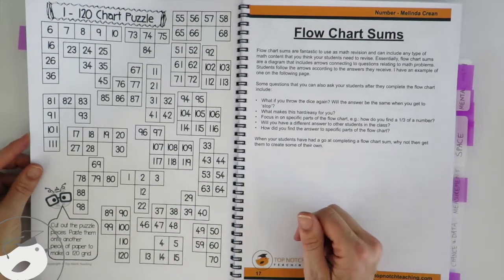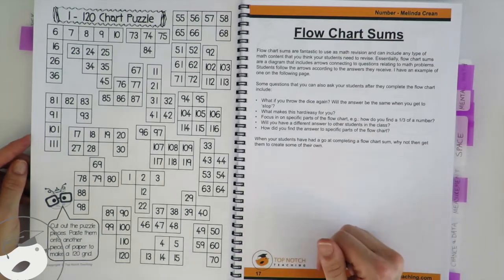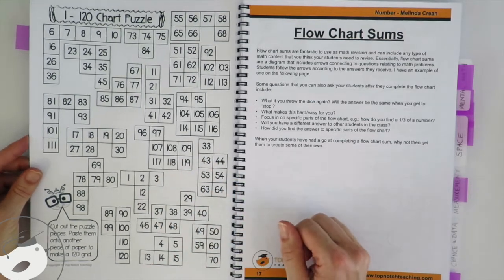So there's a few different options there, and especially for those kids who have trouble getting past the 100 barrier and what comes next, the 1 to 120 chart is good.